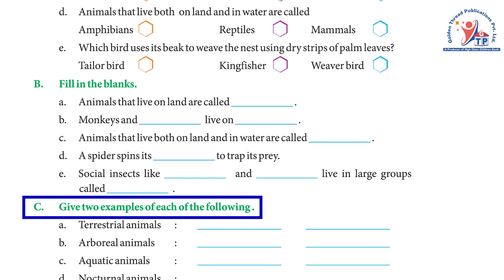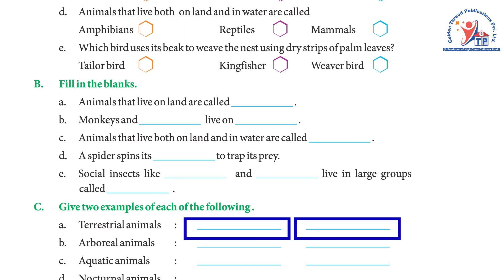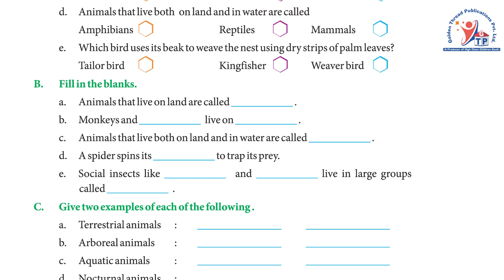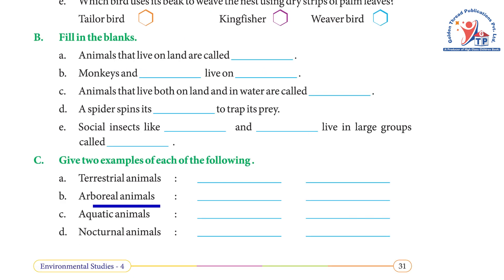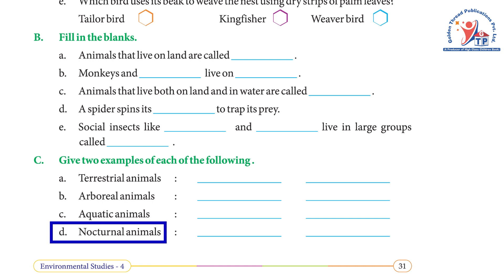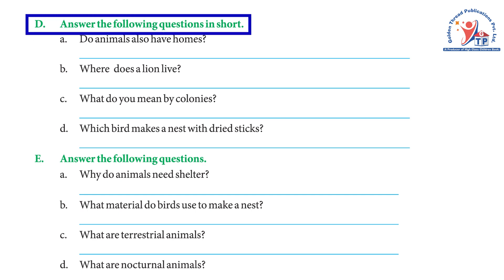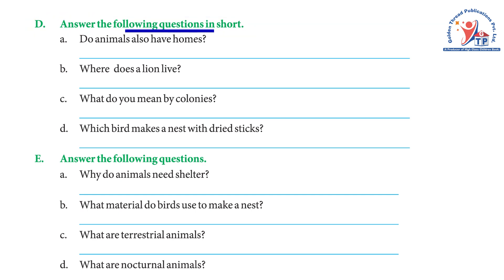Exercise C — Give two examples of each: (a) Terrestrial animals — dog, cat. (b) Arboreal animals — monkeys, chimpanzees. (c) Aquatic animals — fish, shark. (d) Nocturnal animals — owl, rat. Exercise D — Answer in short: (a) Do animals also have homes? — Animals also need a safe place to live; they live in different kinds of homes.